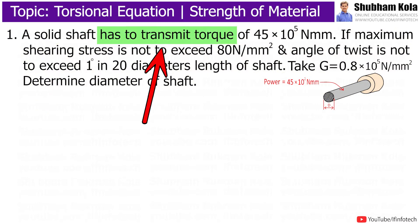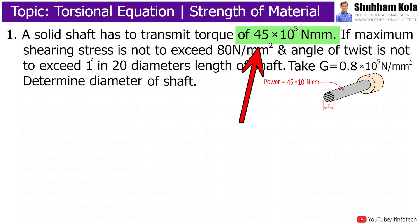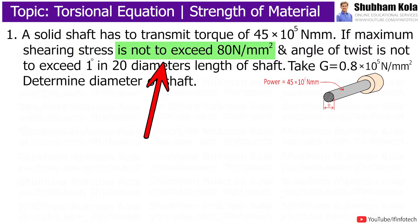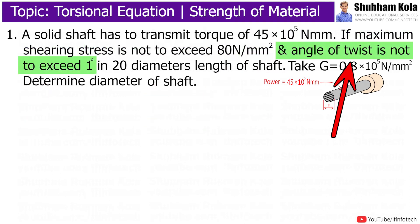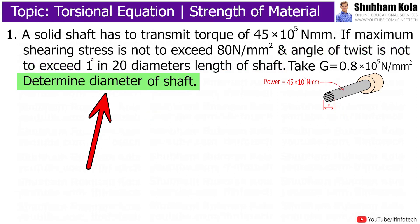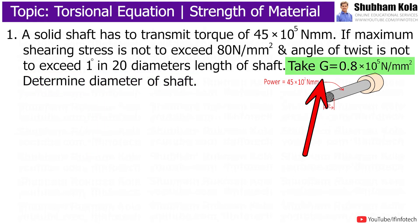A solid shaft is to transmit torque 10×10⁵ Nm. If maximum shear stress is not to exceed 80 N/m² and angle of twist is not to exceed 1 degree in 20 diameters length of shaft, determine the diameter of the shaft. Take G, that is modulus of rigidity, as 0.8×10⁵ N/m².